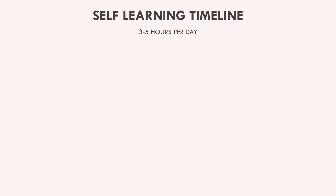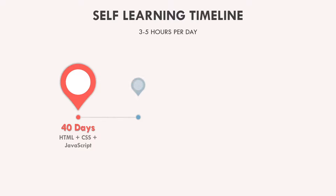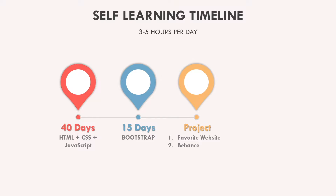If you spend at least three to five hours every day learning and practicing, you should be able to complete HTML, CSS, and JavaScript in 30 to 40 days. Learn Bootstrap once they are done — Bootstrap will take another 10 to 15 days. After that, try creating your favorite website, or you can go to a website like Behance and pick a UI of your choice and try to recreate it.